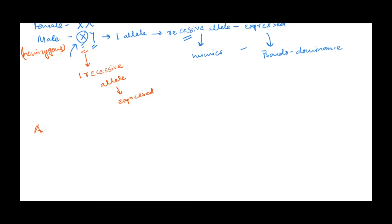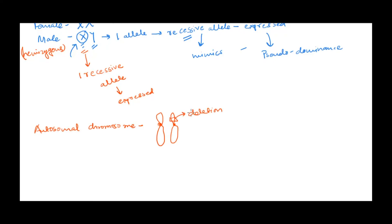We can also observe pseudo dominance in autosomal chromosomes. If one allele from a chromosome pair is lost due to a deletion, whatever is present on the remaining chromosome — even if it is a recessive allele — is going to get expressed. This is again an example of pseudo dominance.